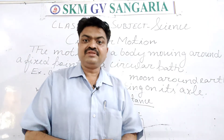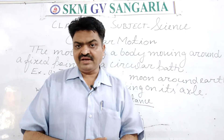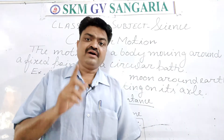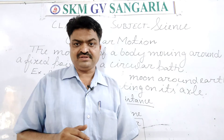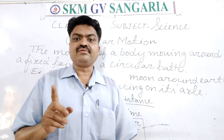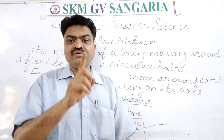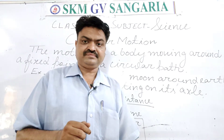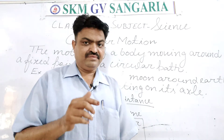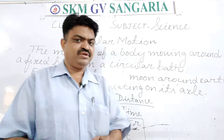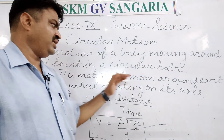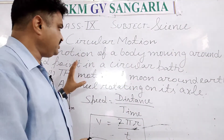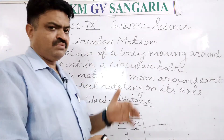Like this, the satellites that we have around the earth — those satellites also have circular motion, in which they revolve around the earth. The moon, which is the natural satellite of the earth, also has circular motion. So that is about circular motion.